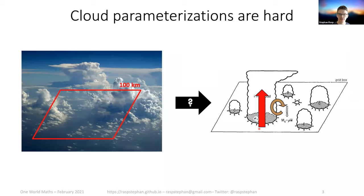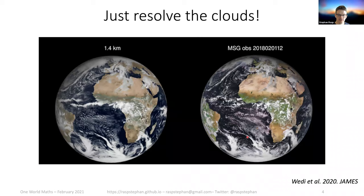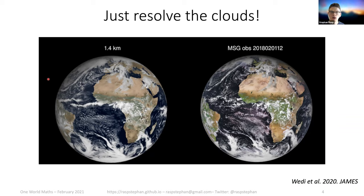We want to improve these parameterizations, and a lot of people are working on it, but there's really no clarity whether this will actually lead to a decrease in uncertainty between different climate models. One solution would be to just resolve all the clouds — if we actually resolve them, we need to make fewer approximations. Here is a snapshot from a 1.4-kilometer simulation run with the ECMWF IFS model, with a corresponding satellite observation on the right. There's incredible detail in the clouds, and we can run these global cloud-resolving simulations now. The problem is we cannot run them long enough to estimate climate change in a meaningful way.